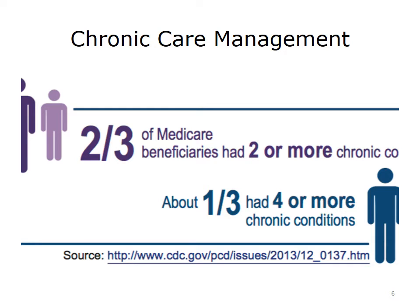Chronic care management is extremely relevant to Medicare. Approximately two-thirds of Medicare beneficiaries have two or more chronic conditions, and of that group, one-third have four or more chronic conditions. To improve quality and control cost, providing an incentive to manage those with chronic conditions makes sense. It is better for everyone if those patients can stay out of the hospital, but it can be challenging to achieve that goal. In 2015, payment codes were introduced for chronic care management. These codes served as an acknowledgment that people with two or more chronic illnesses require a different kind of health care coordination.